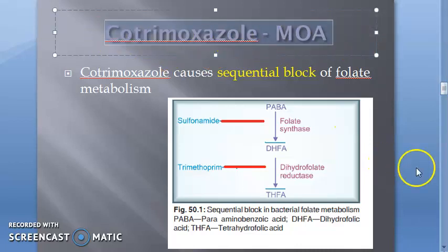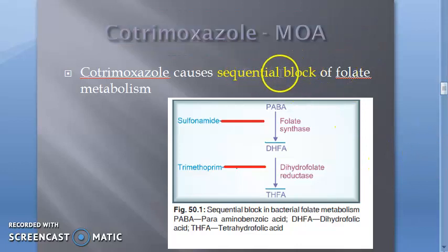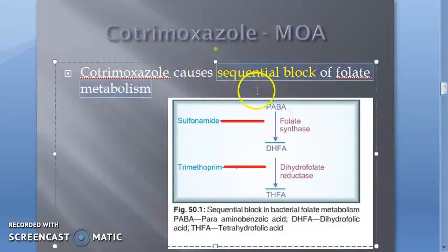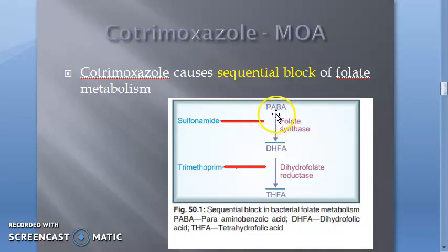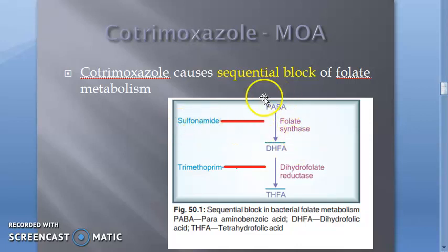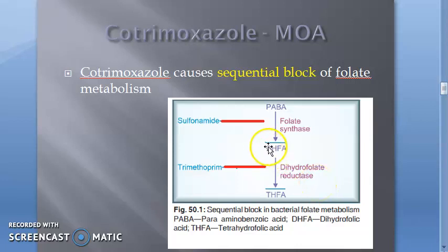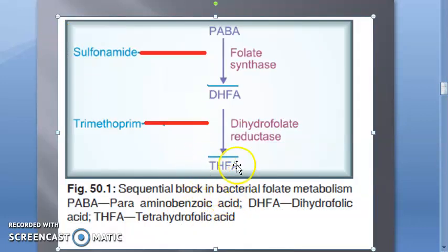The mechanism of action of cotrimoxazole is a sequential block of folate metabolism. First, pteridine plus PABA plus glutamic acid gives folate via folate synthase — sulfonamide blocks this step. Second, trimethoprim inhibits dihydrofolate reductase, which converts dihydrofolate to tetrahydrofolate. Tetrahydrofolate is the active form, so the bacteria cannot have active folic acid.